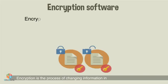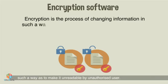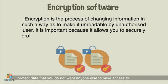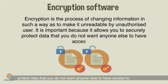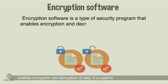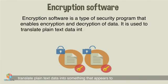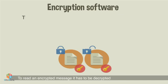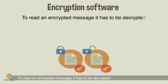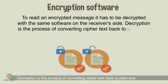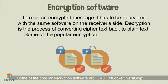Encryption Software: Encryption is the process of changing information in such a way as to make it unreadable by unauthorized users. It is important because it allows you to securely protect data that you do not want anyone else to have access to. Encryption software is a type of security program that enables encryption and decryption of data. It translates plain text data into something that appears random and meaningless, known as cipher text. To read an encrypted message, it has to be decrypted with the same software on the receiver's side. Decryption is the process of converting cipher text back to plain text. Some popular encryption softwares are GNU, BitLocker, and VeraCrypt.